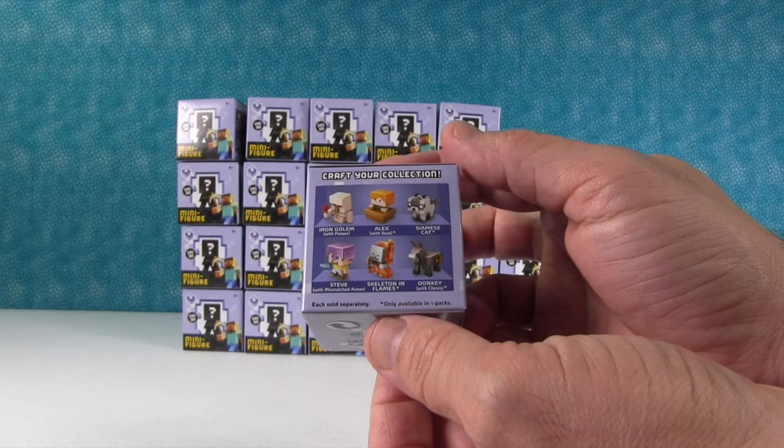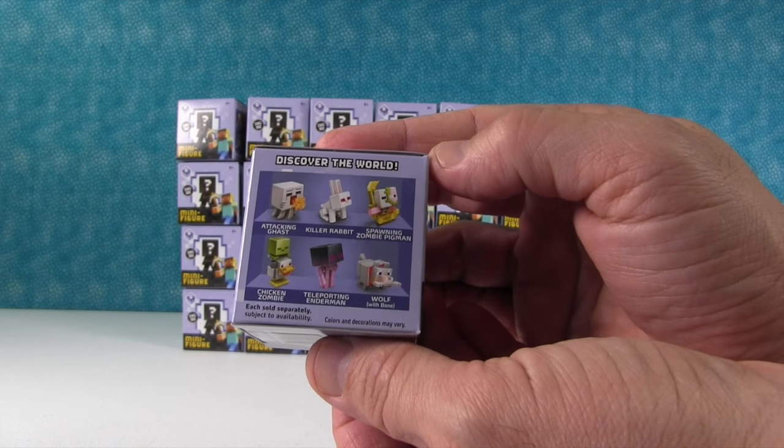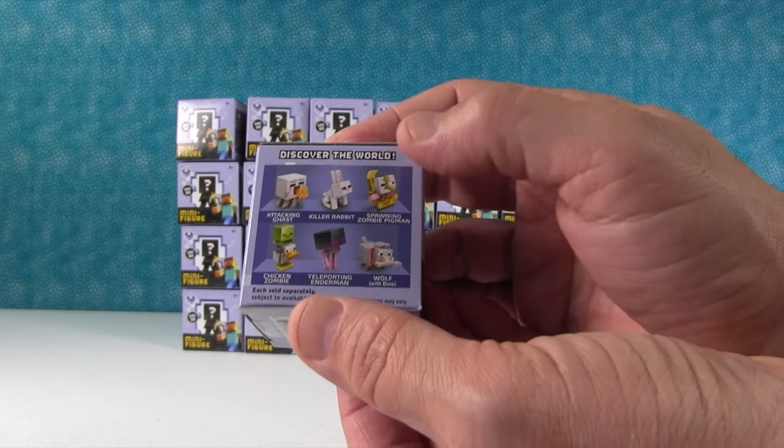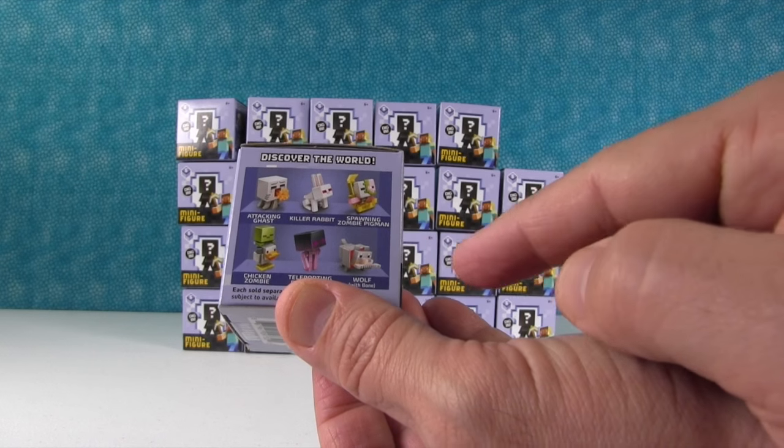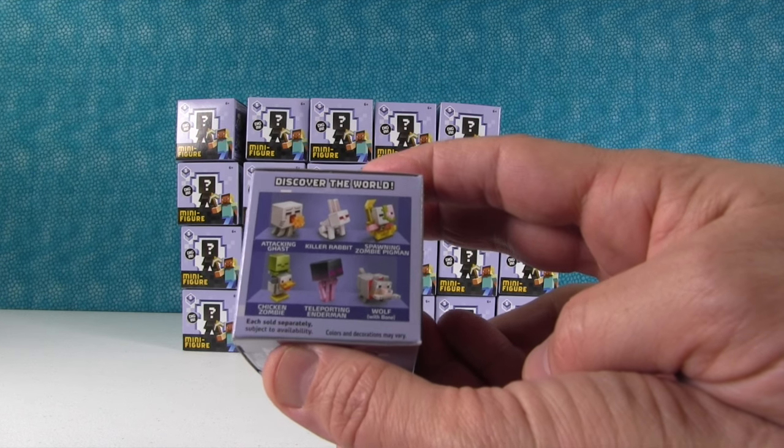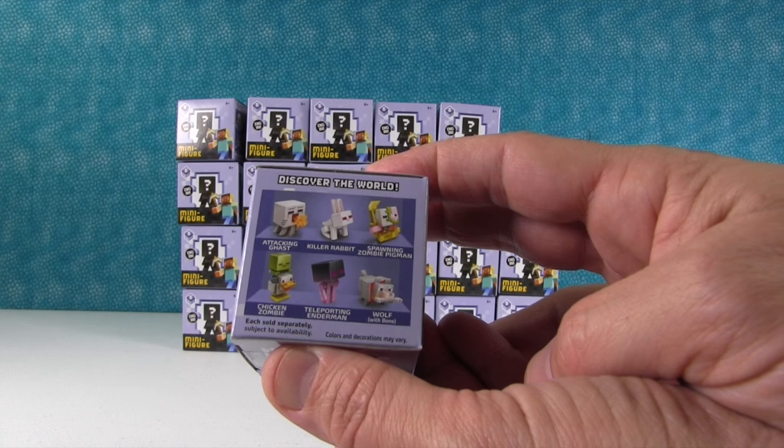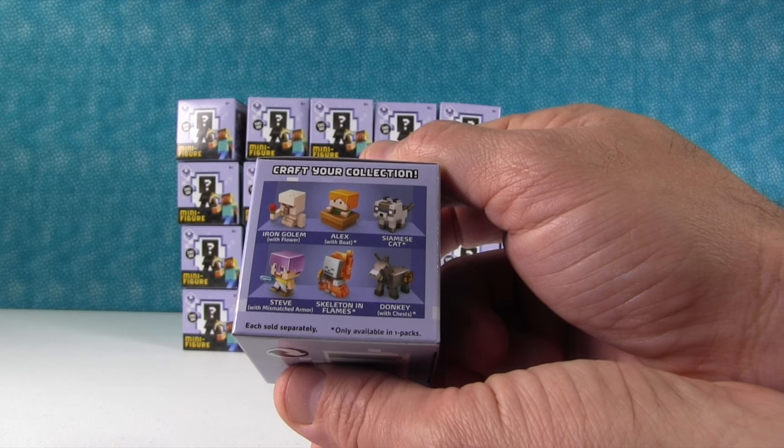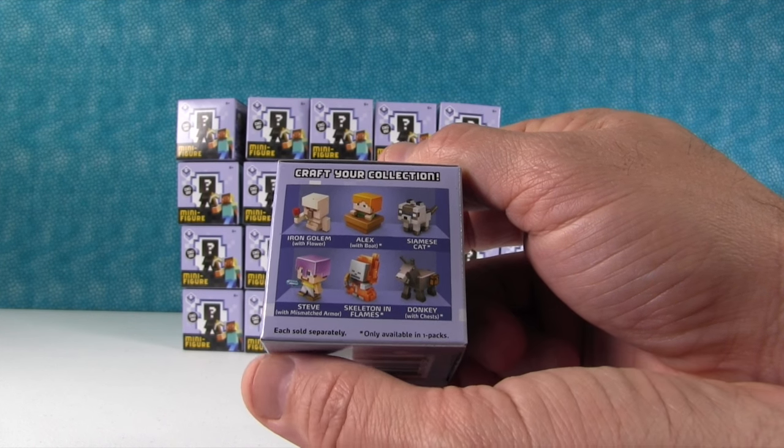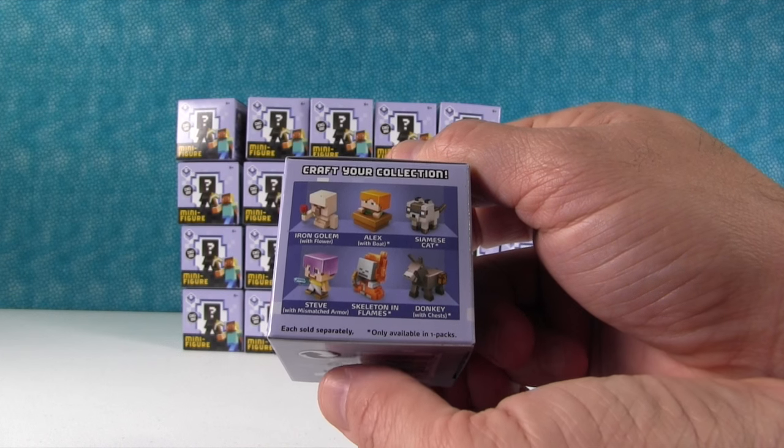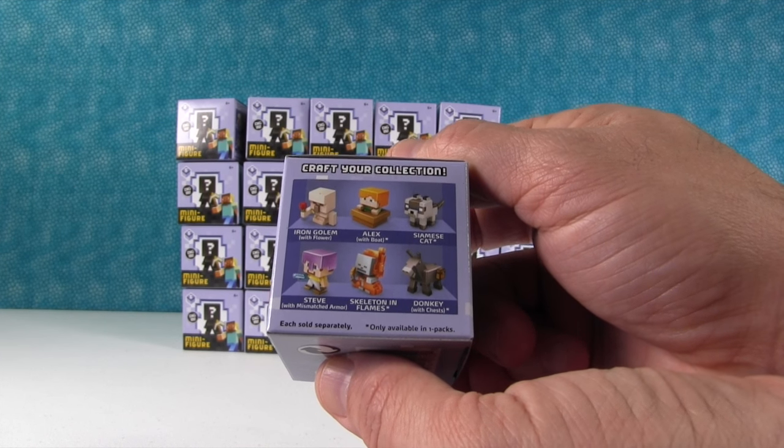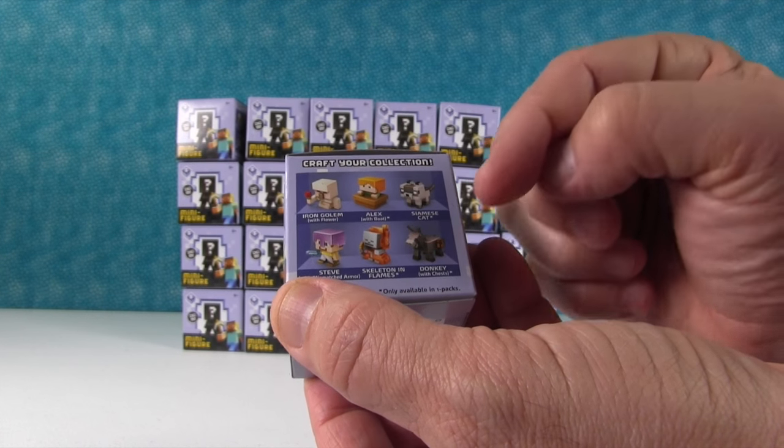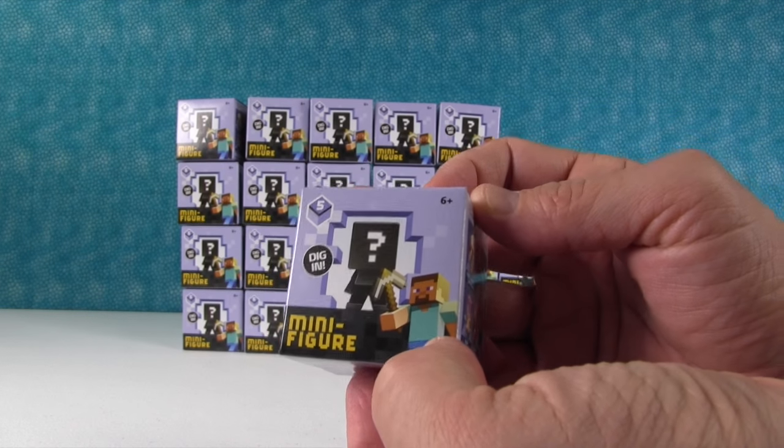The Ice Series! That's awesome. We love the Minecraft minifigures in the mystery boxes. It looks like we can get the attacking ghast, the killer rabbit, spawning zombie pigman, a chicken zombie, teleporting enderman, wolf with a bone, the iron golem with flower, Alex with a boat, the Siamese cat, Steve with mismatched armor, skeleton in flames, and donkey with chests. It looks like Alex, the cat, the donkey, and skeleton in flames are exclusive to these boxes.